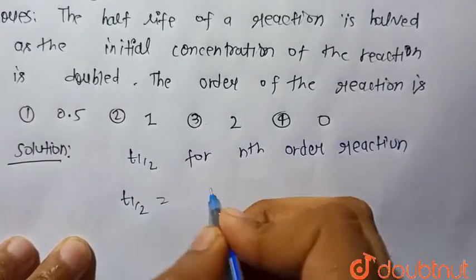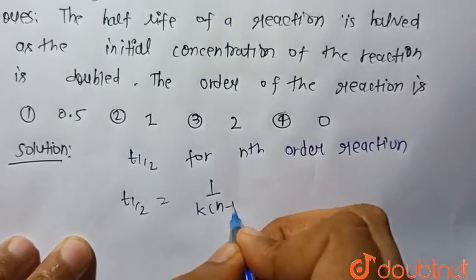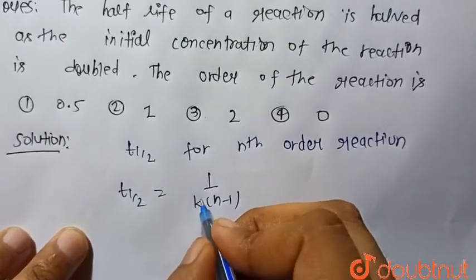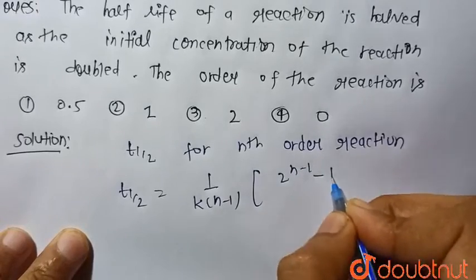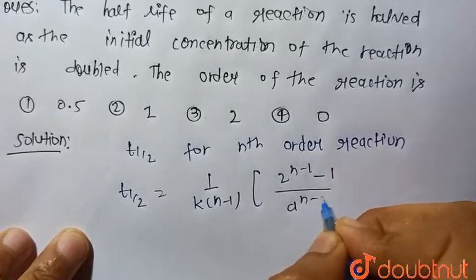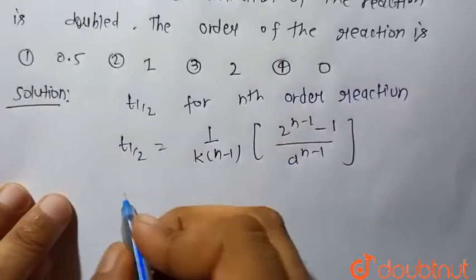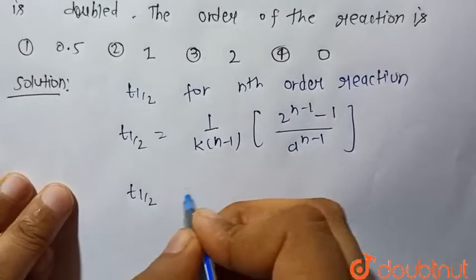t_half is equal to 1 upon k(n-1), where k is the rate constant and n is the order of the reaction, equals 2 to the power (n-1) minus 1 upon a to the power (n-1).